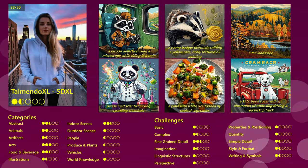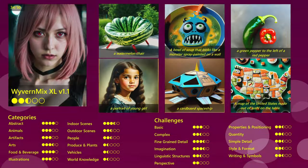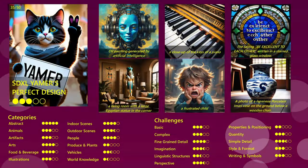Then there is Talmando XL SDXL, and I really had my problems with it. It's still declared as Beta, so maybe that's the reason why I couldn't get anything meaningful out of it, although I really tried. So sorry, I have to put it into E. Next is the Wyvern Mix XL 1.1. Not really bad at some categories, while it really underperformed at others, and sometimes it really showed some quality issues. So not really convincing, and it's going into D. Next is the SDXL DMS Perfect Design, which wasn't always that perfect as you might think, although it outperformed at abstract scenes and was quite reliable over most other categories. So not too bad, and it's going into C.